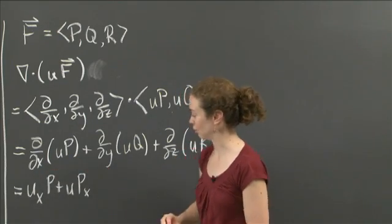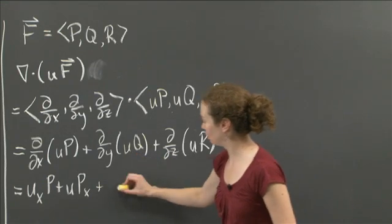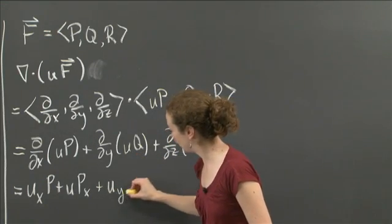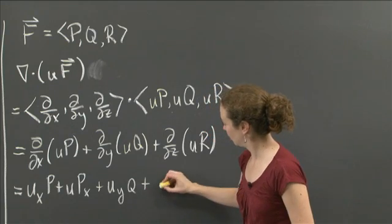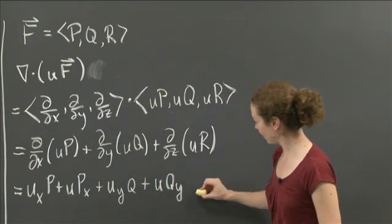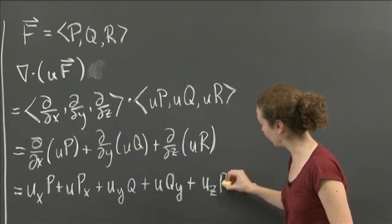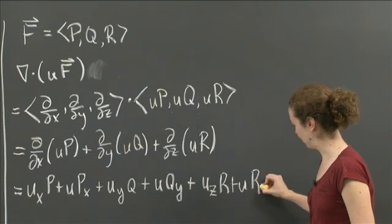I can do the same thing for the y derivative of uQ. I get u_y Q plus uQ_y. And then the last component, I do the same thing for z. I get u_z R plus uR_z.